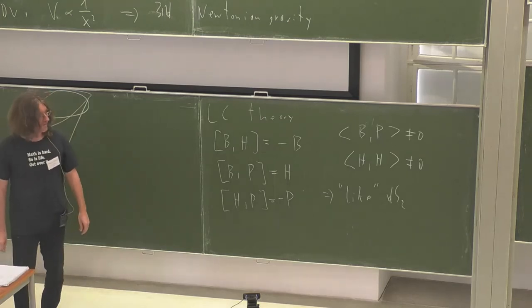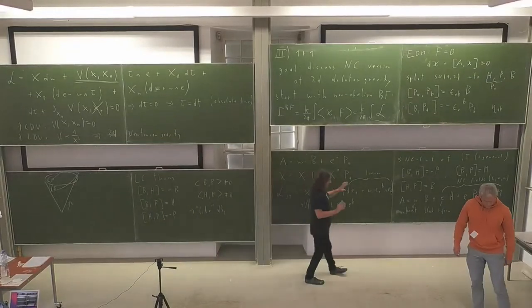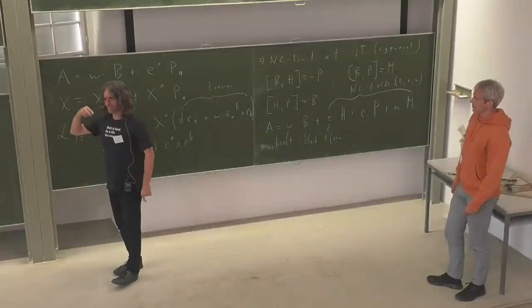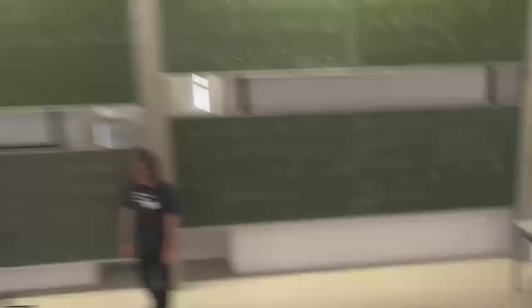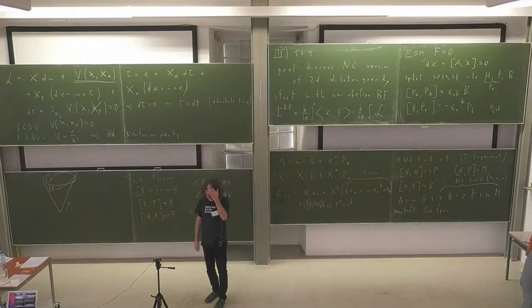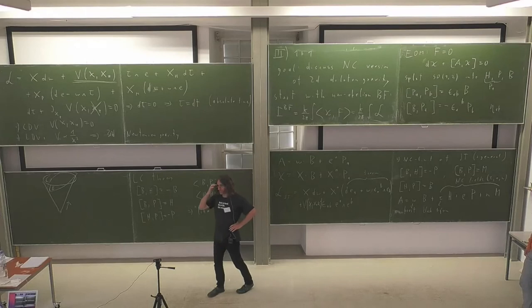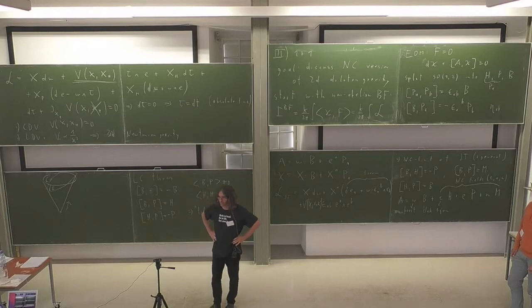Final question: for higher spins in 1+1 dimensions, the generalization of 2D dilaton gravity to higher spin (the analog of the JT model) is not known. The Newton-Cartan-like contraction and even the flat space contraction of two-dimensional higher spin gravity — as far as I know — is not known. And the analog of the Poisson-sigma model deformation for higher spin is also unknown. We know much less about higher spin in 1+1 dimensions than in 2+1 dimensions.